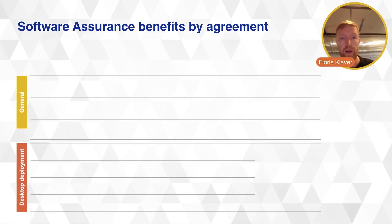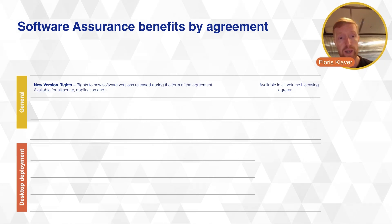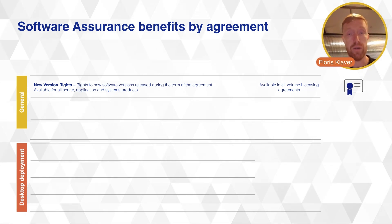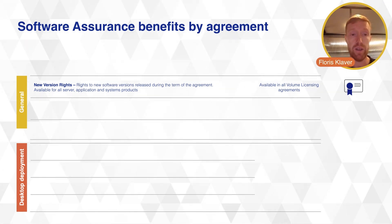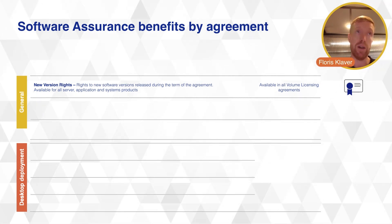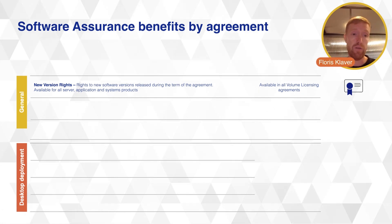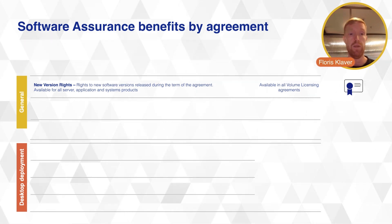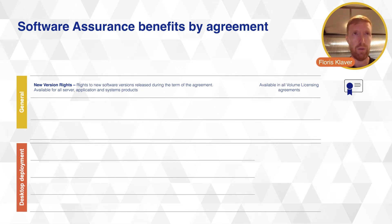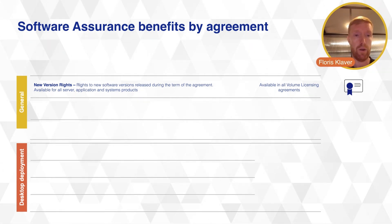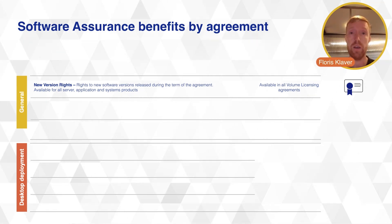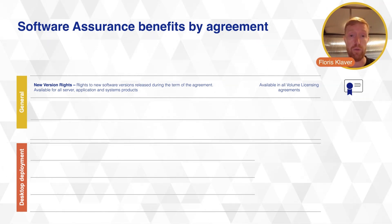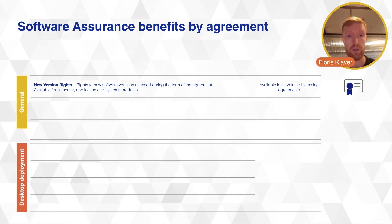There are many different items in Software Assurance, called out on this slide as benefits by agreement. A key general benefit is new version rights, which is very important for many Microsoft customers. It allows you to use newer versions that Microsoft releases for a product. For example, if you buy Windows Server with Software Assurance in 2012 and have continuously paid your Software Assurance each year, you have the right to use the latest version — such as 2022 — no questions asked.